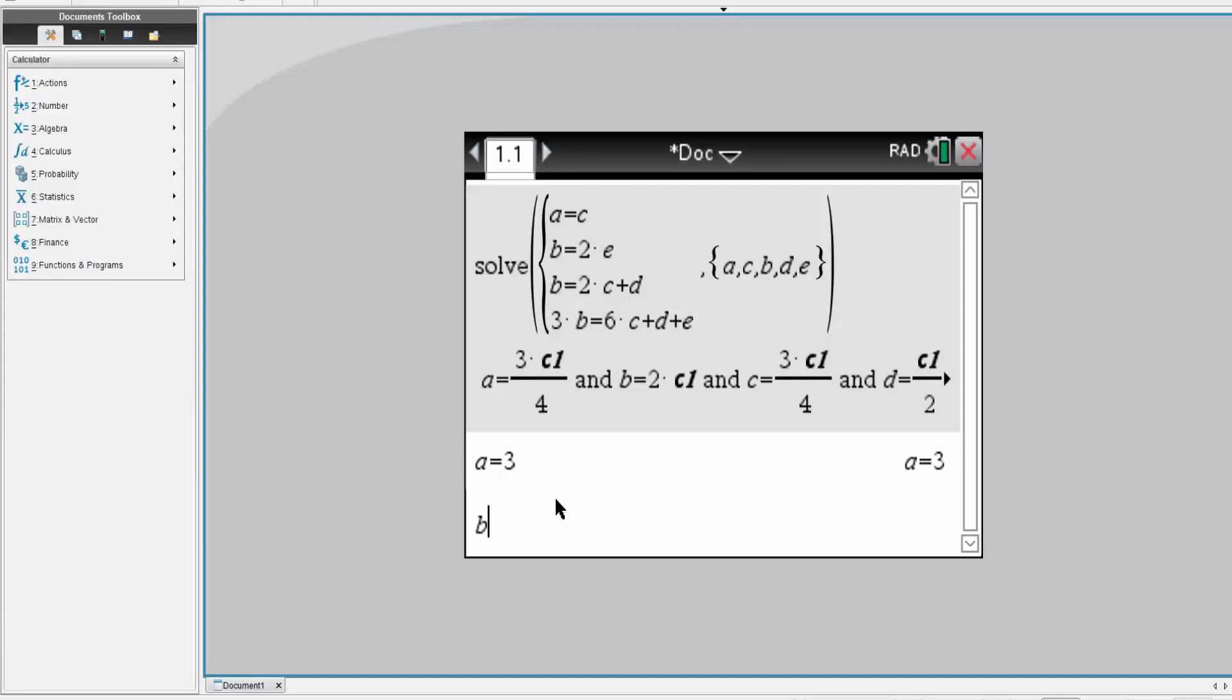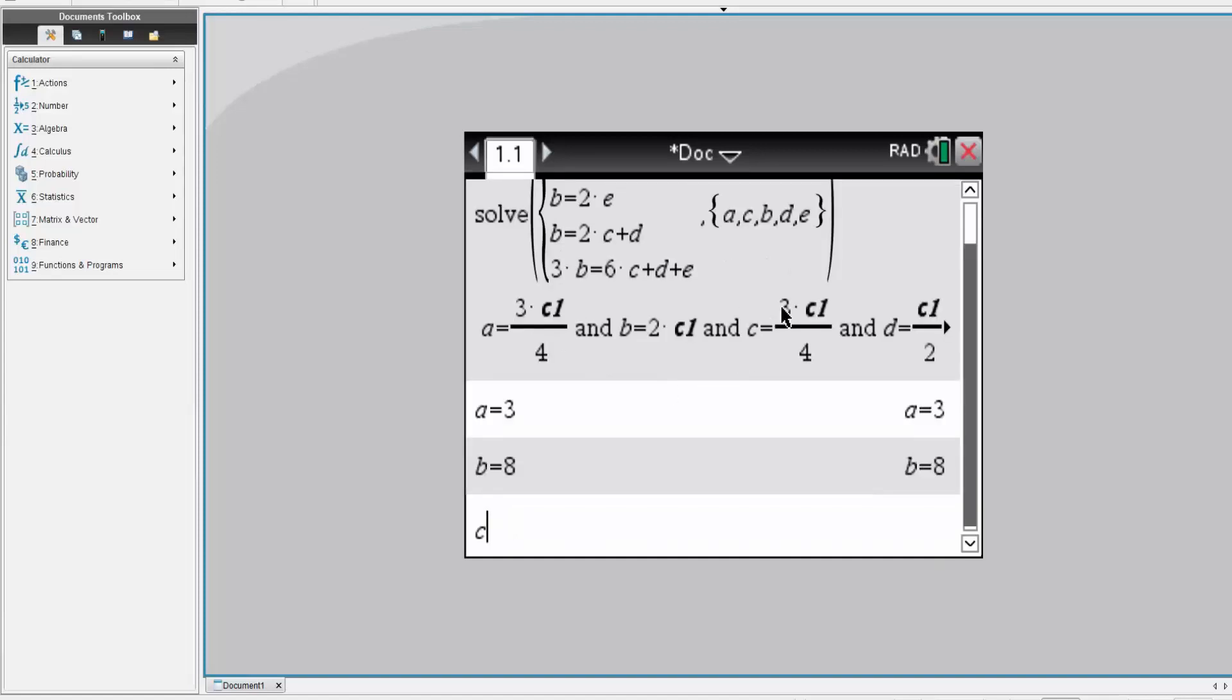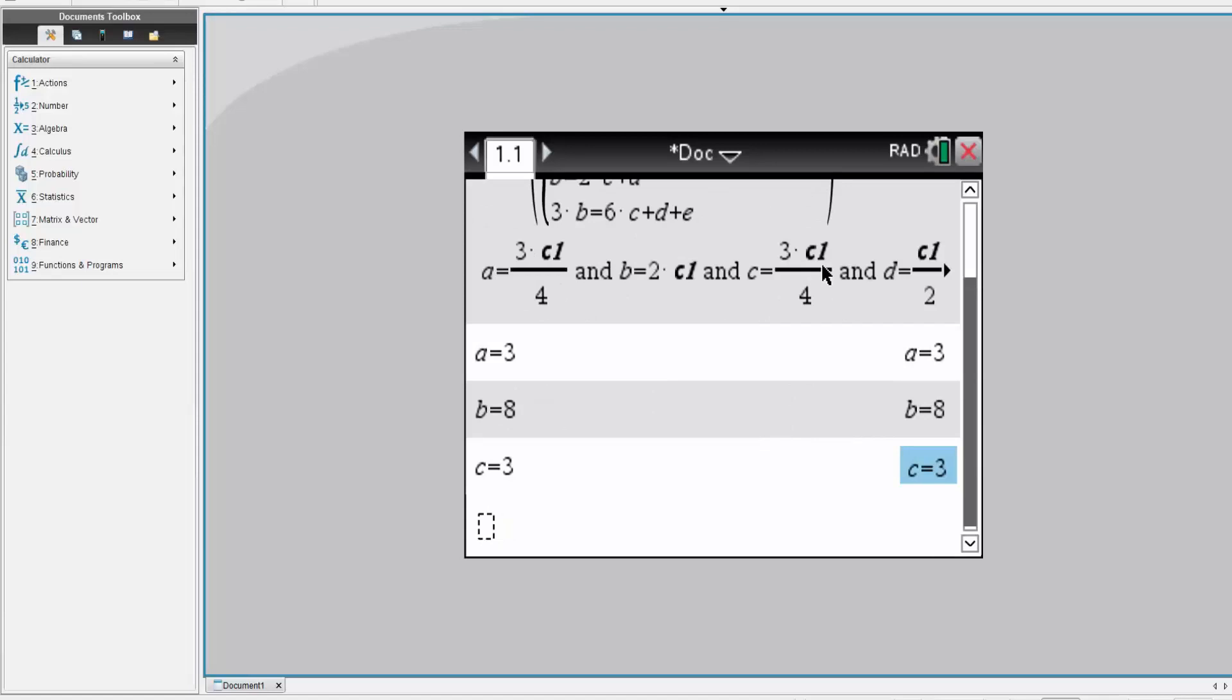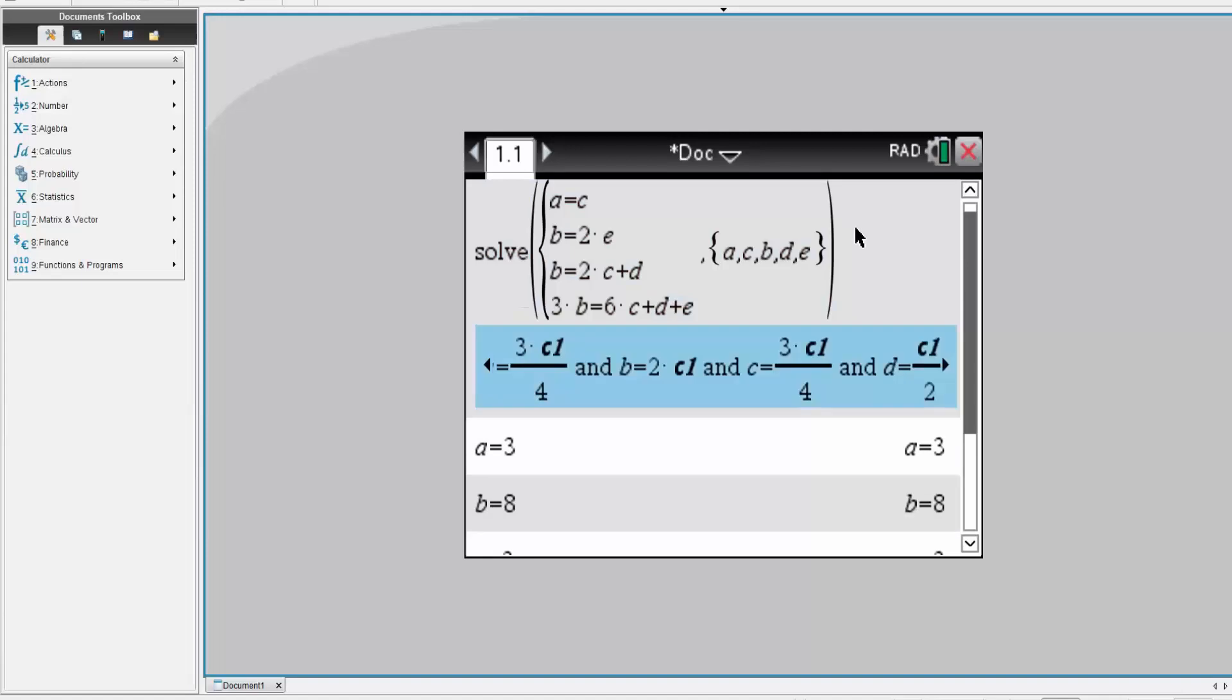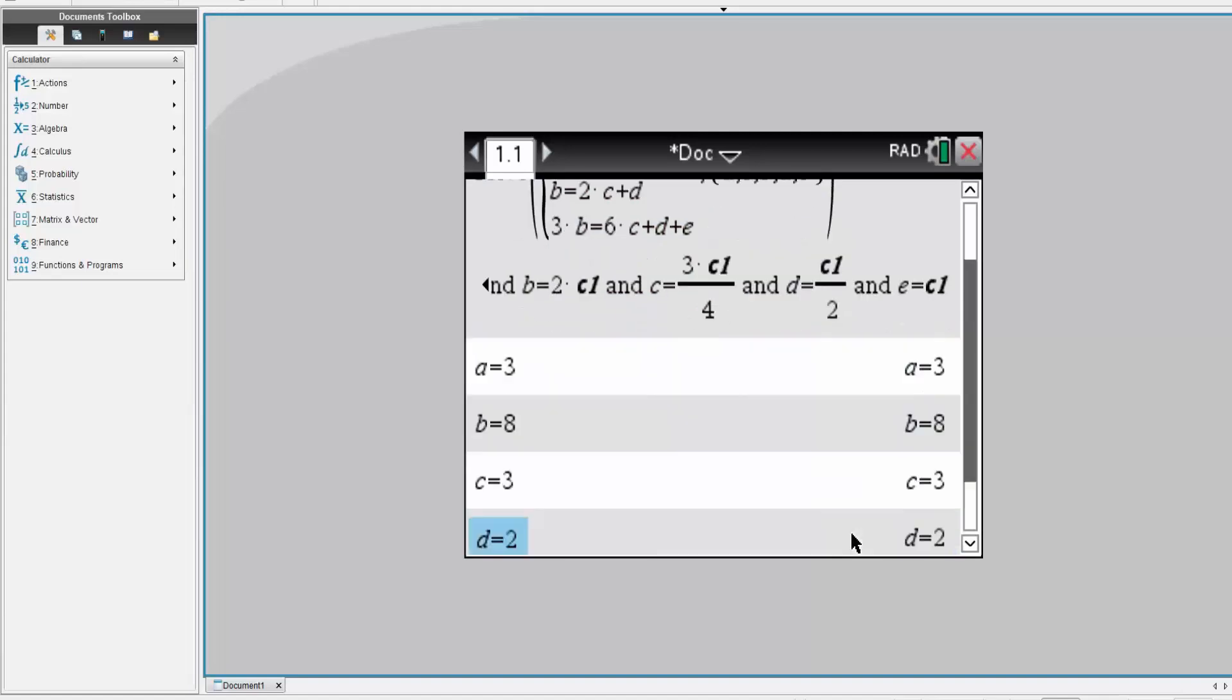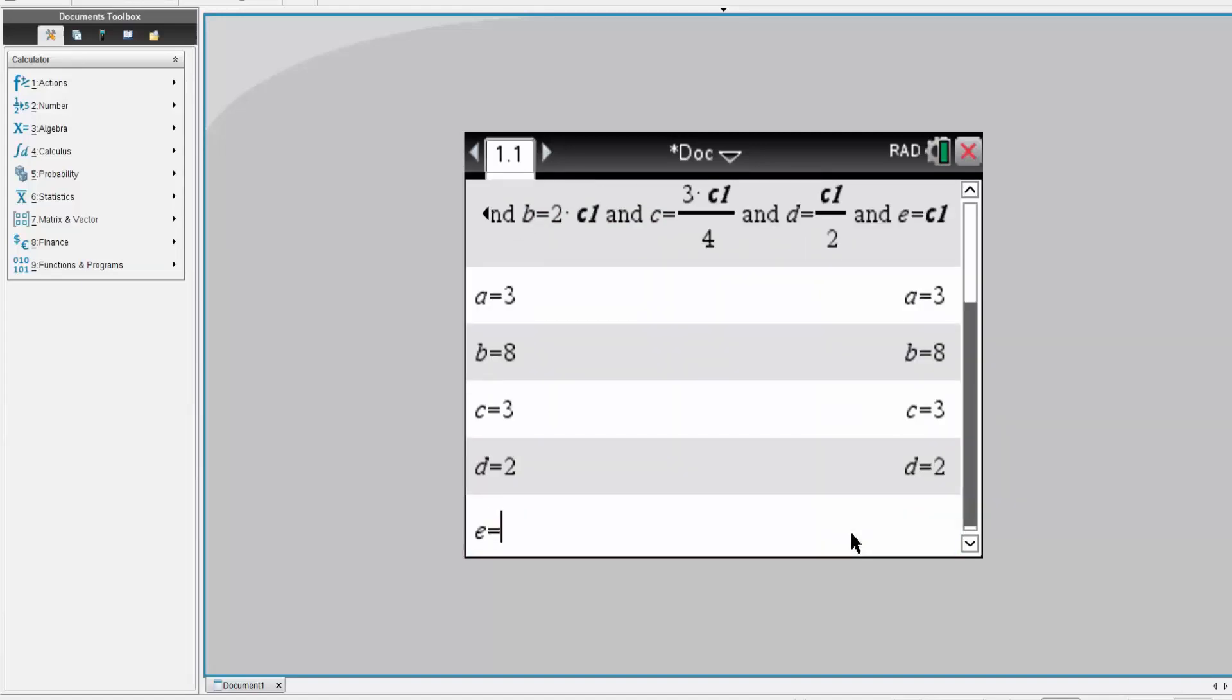B will be, so times it by four, you get eight. C will be times it by four, you get three. And D will be times it by four, you'll get two. And E times it by four, you'll get four. So E is equal to four.